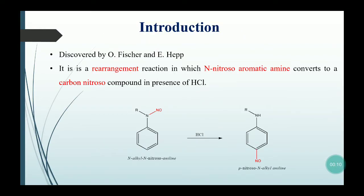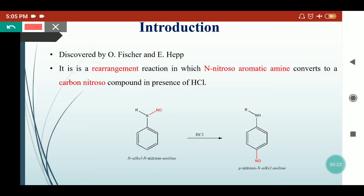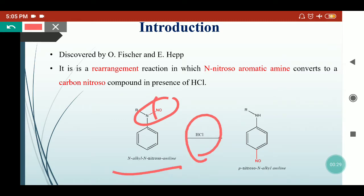The Fischer-Hepp reaction is a rearrangement reaction in which N-nitroso aromatic amines convert into C-nitroso aromatic amines. HCl acts as the catalyst. In the presence of HCl, the nitroso group migrates from nitrogen to the para position with respect to the NH group, giving para-nitroso alkyl anilines as the product.